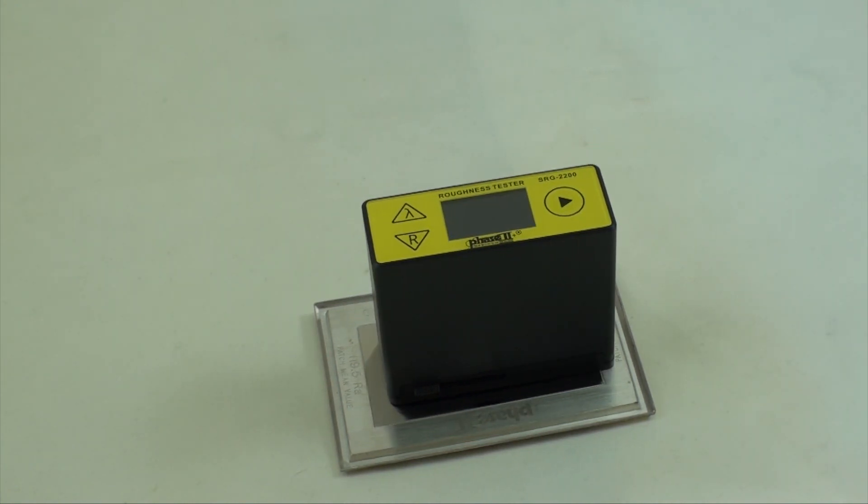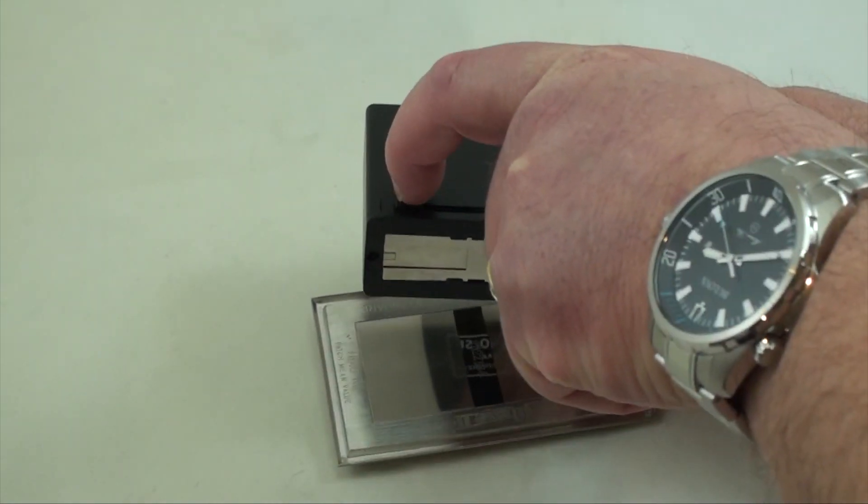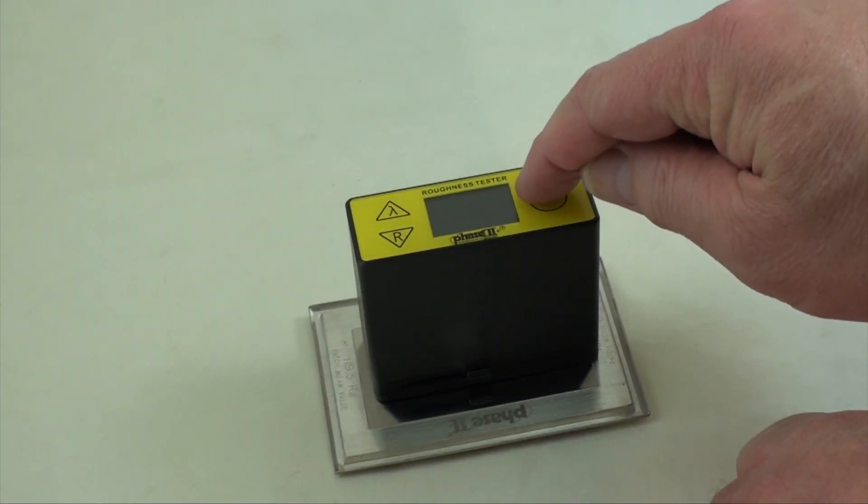Let's begin by opening the stylus protector cover on the bottom. Power up the unit from the right arrow button.